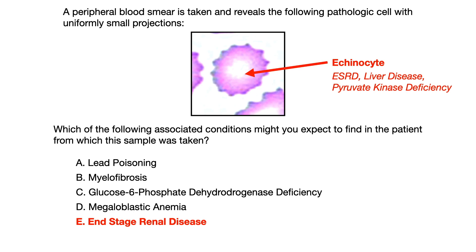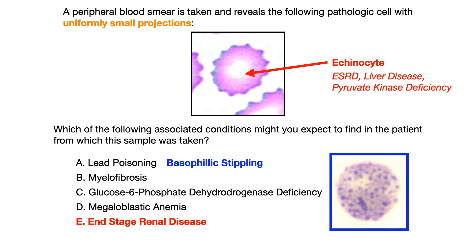The echinocyte image is given to you and also described as a pathologic red blood cell with uniform small projections. For choice A, lead poisoning, you would see what's known as basophilic stippling, shown in the bottom right-hand corner of the slide. That image is distinctly different from the one given, because basophilic stippling does not have uniformly small projections. So if you know that lead poisoning is associated with basophilic stippling, you could have eliminated choice A and narrowed down to a 25% chance of guessing correctly.